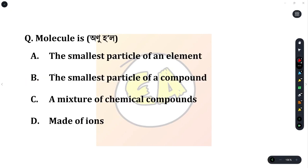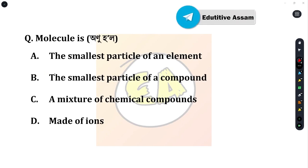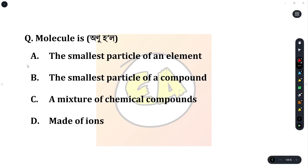Next question: a molecule is? Option A: the smallest particle of an element. Option B: the smallest particle of a compound. Option C: a mixture of chemical compounds. Option D: made of ions. The correct answer is the smallest particle of an element.